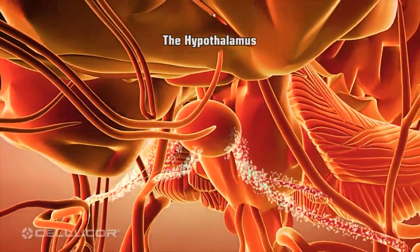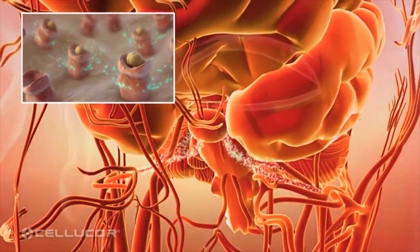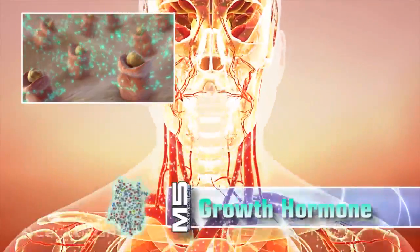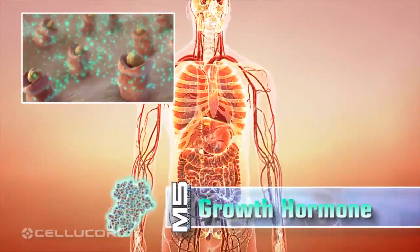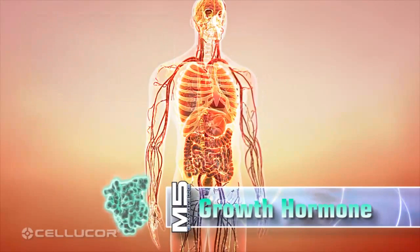M5 Extreme also provides ingredients that activate the GABA receptors located in the brain's hypothalamus. The hypothalamus is responsible for the secretion of growth hormone. When GABA receptors are activated, growth hormone is released and circulates throughout the body, including to muscle cells.